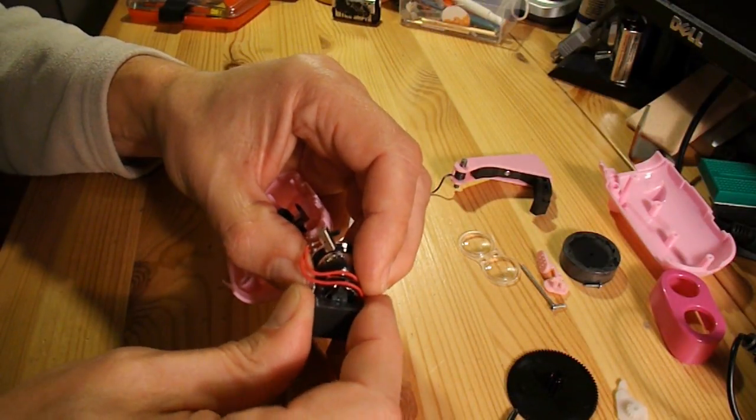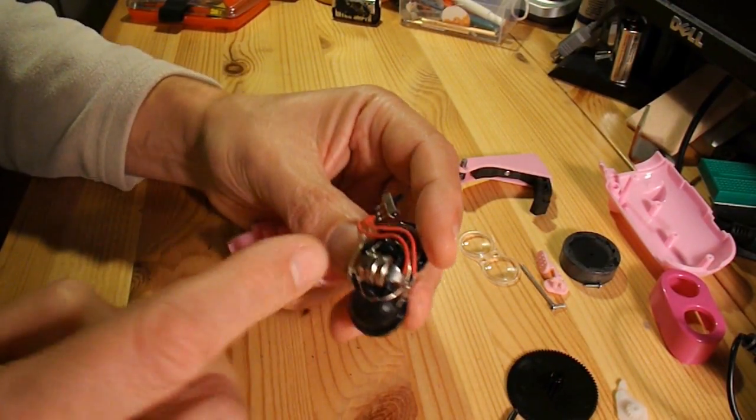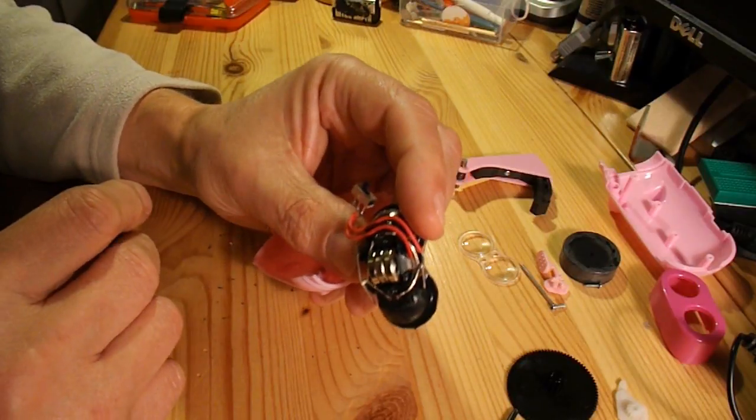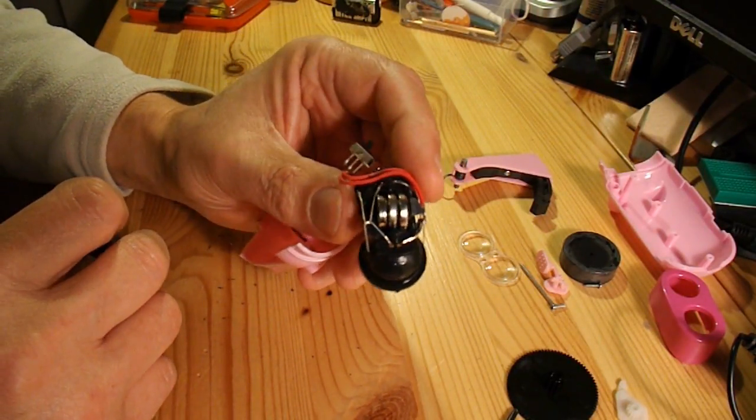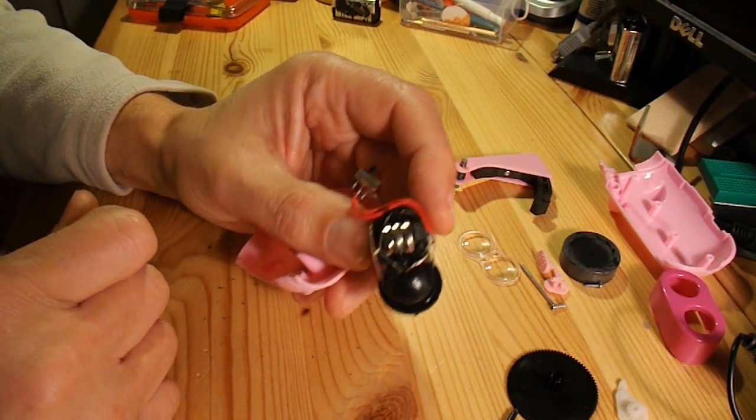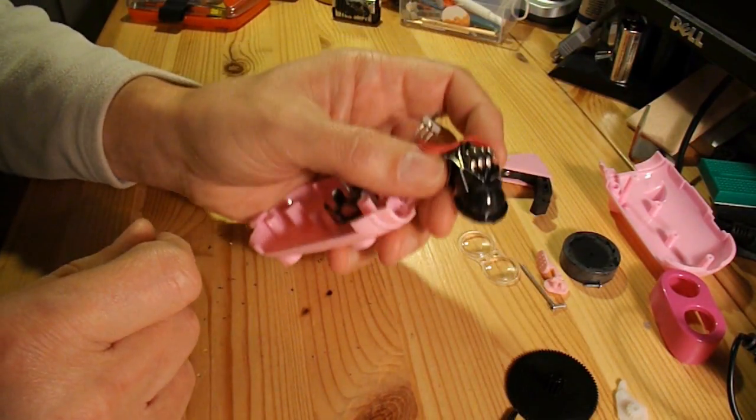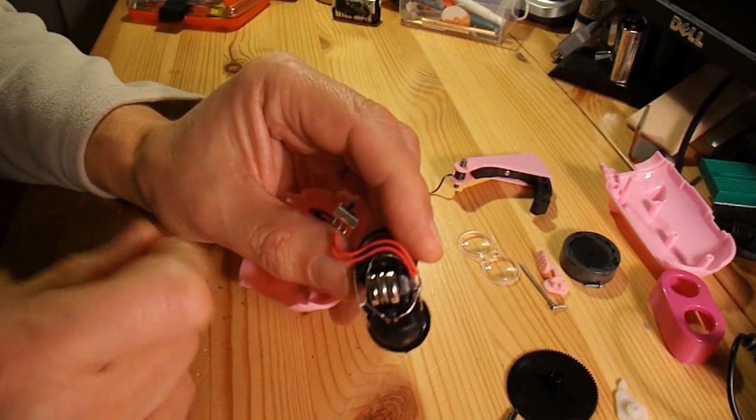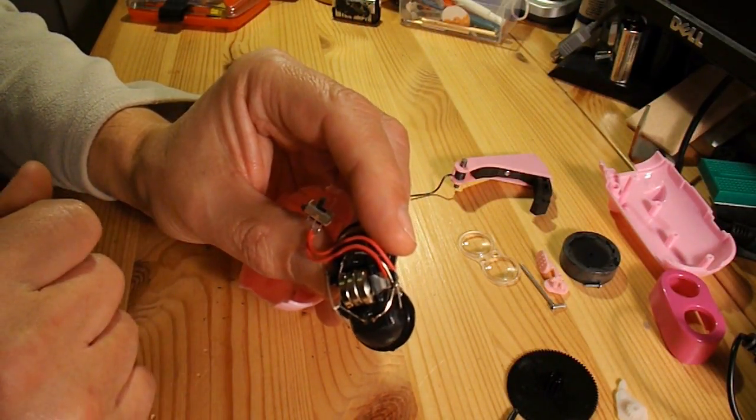And buried in here. We got three little button cells. I always think it's a bit of a cheat that. You think that the torch is being driven by the dynamo. When in fact most of the time it's just being driven by those button cells.